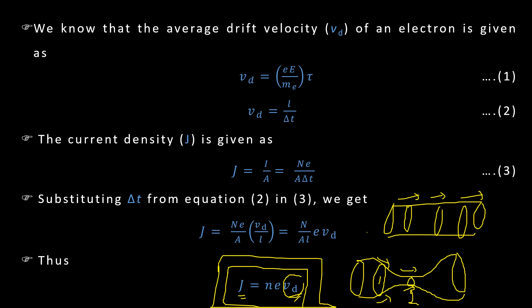So that was the topic today and this is the relation J is equal to neVd where n is the number density, number of electrons per unit volume. Thank you.